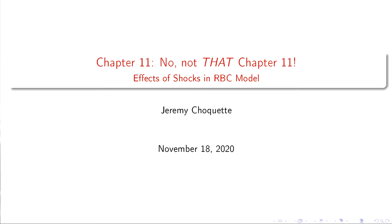Welcome back. Last time we learned about impulse response functions. We learned that you could take time series data and put it into a VAR, which models multiple regression equations simultaneously, and you can identify certain types of shocks within that model depending on what data you have. We saw an aggregate demand shock and an aggregate supply shock because I dynamically modeled output and price.